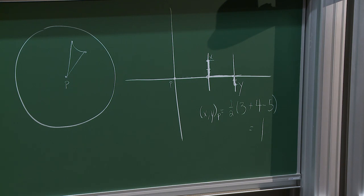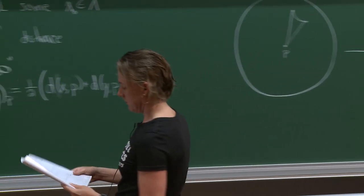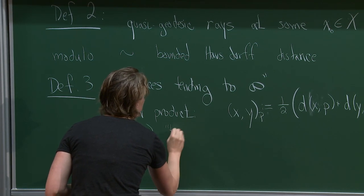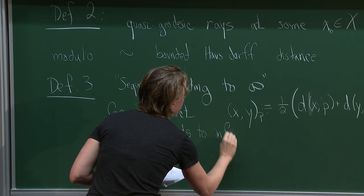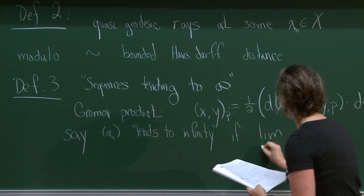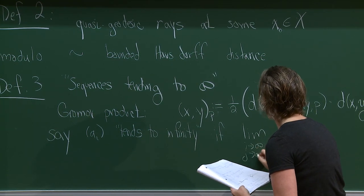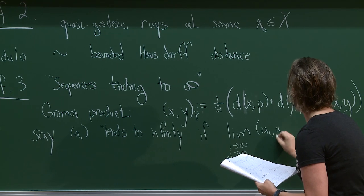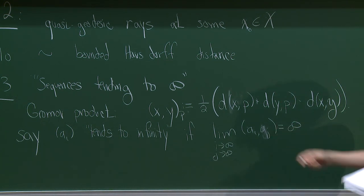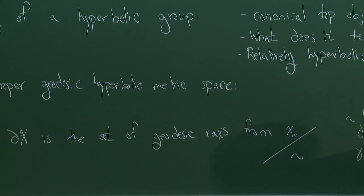I'm going to say that a_i tends to infinity if the limit as i and j go to infinity of (a_i · a_j) equals infinity — meaning whenever i and j are bigger than some number, this can be made as large as we want. It's a good idea to play with that in a tree. The tree is zero-hyperbolic, so everything is nice.